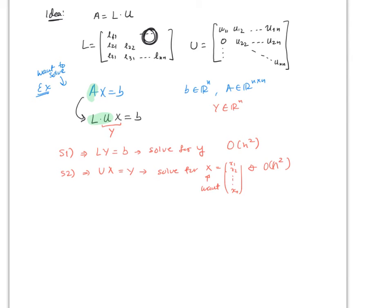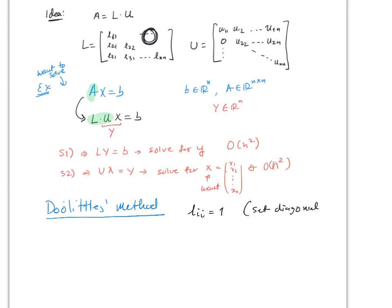There are multiple ways to find L and U. We're going to focus on a specific method called Doolittle's method. In Doolittle's method, the diagonal entries of L are all set equal to 1 by default. This makes solving for the remaining variables in L much easier.